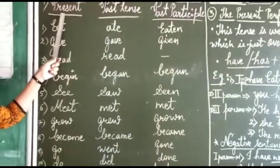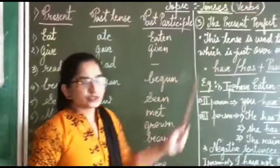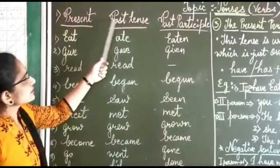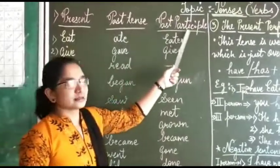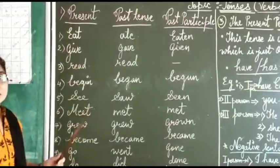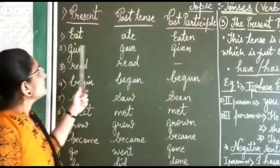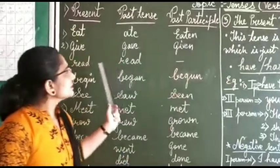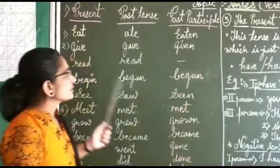Before going to the present perfect tense, we should know the present tense, past tense, and past participle forms of verbs. These are called irregular verbs, and whenever we are using the present perfect tense, these are the verbs that should be used.